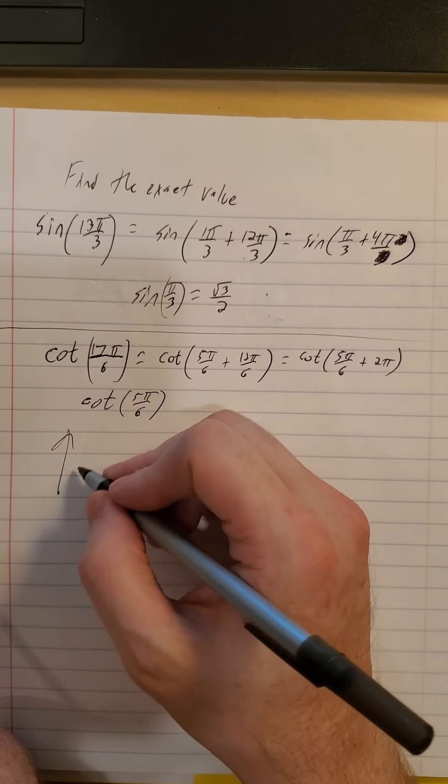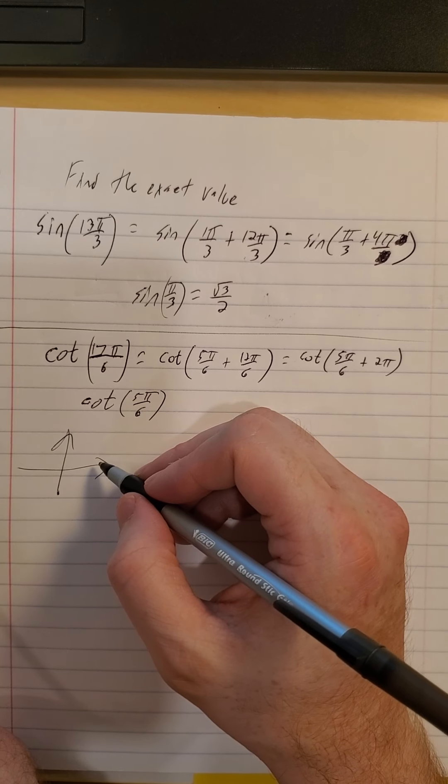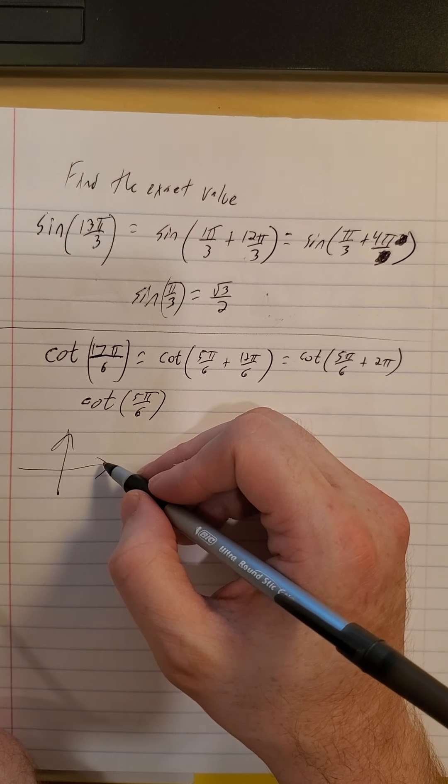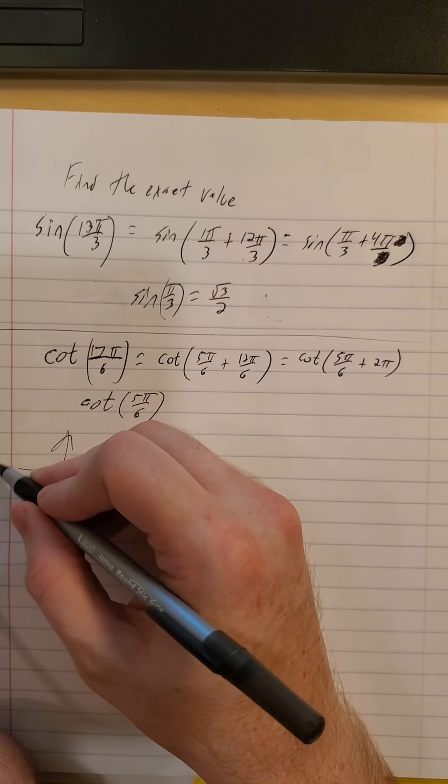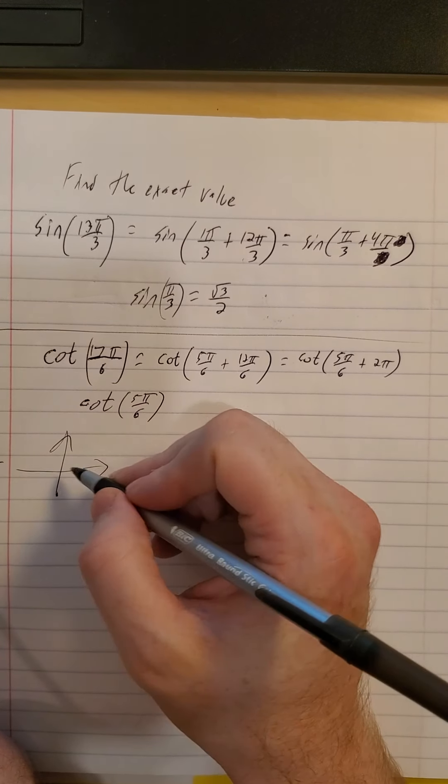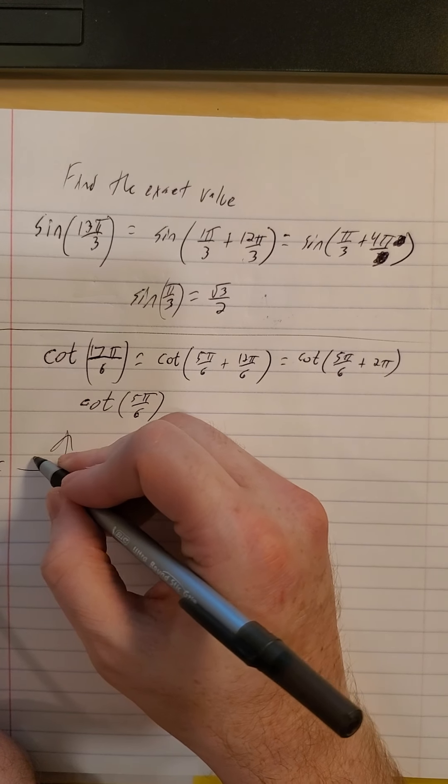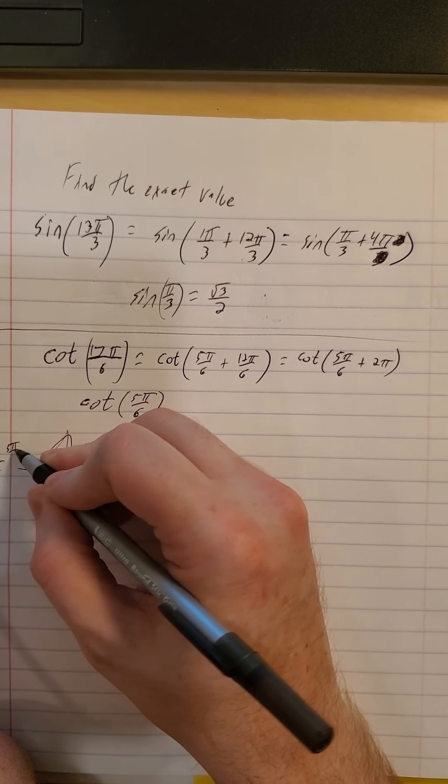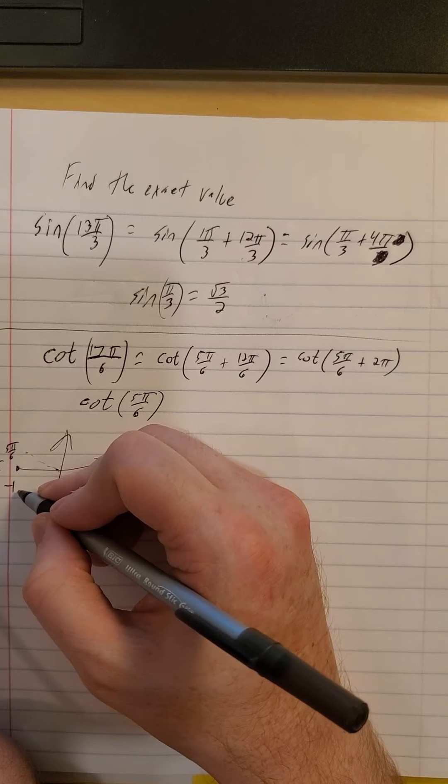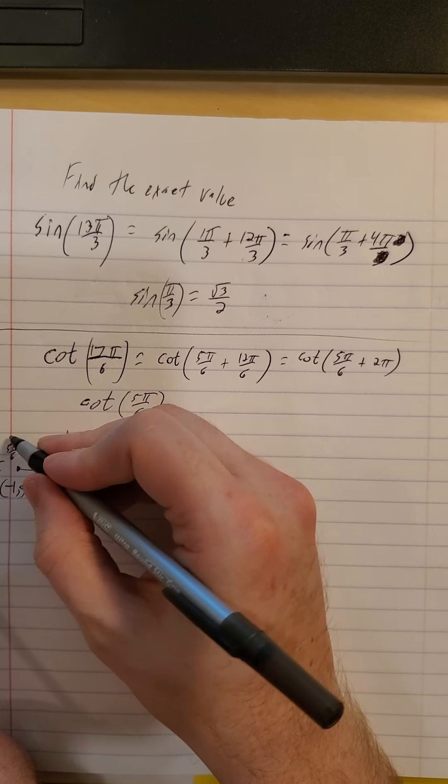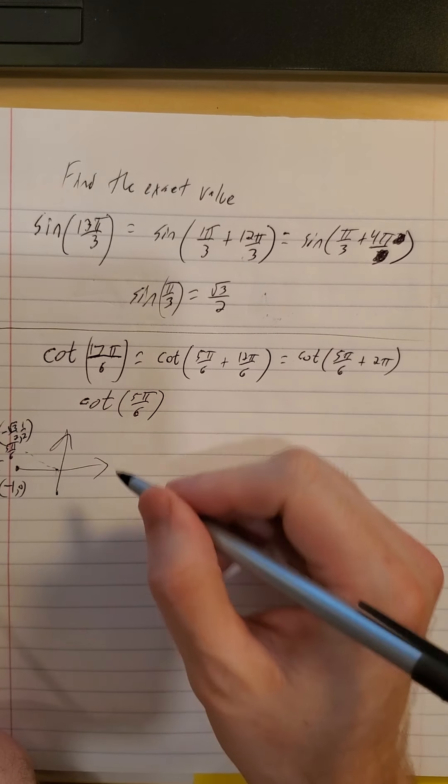So this one, let's make a little sketch. So π over 6, remember, is 30 degrees. So 6π over 6 would be 1π. So this is 30 degrees shy of 180 degrees. So this one is at, on the unit circle, negative 1, 0. So this is at negative root 3 over 2, positive 1 half.